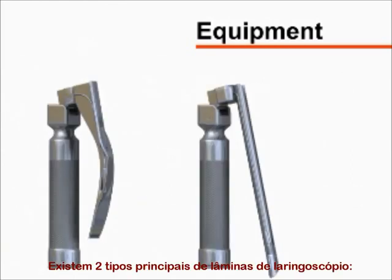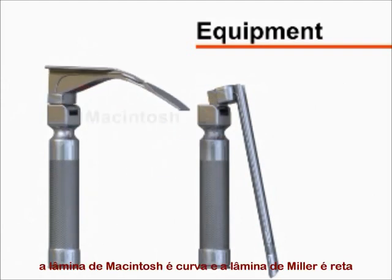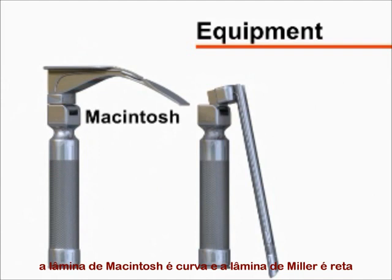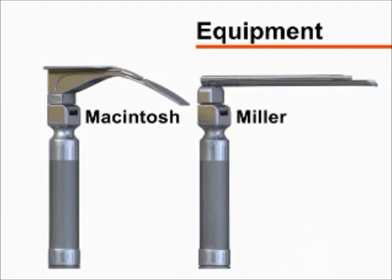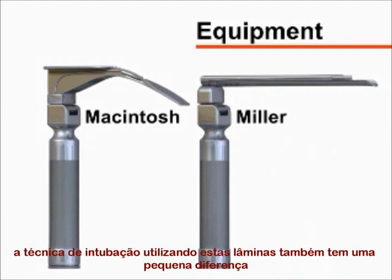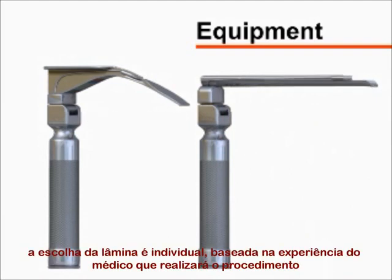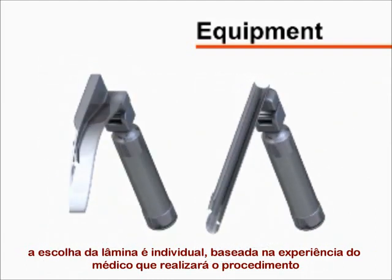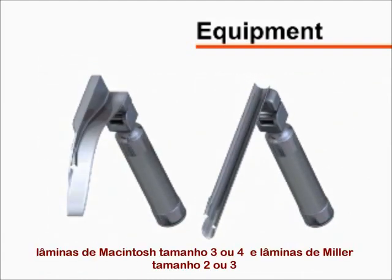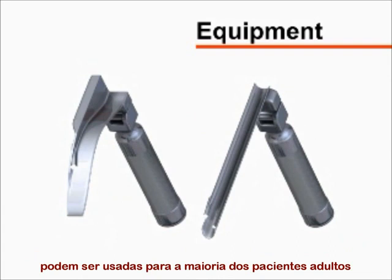There are two main types of laryngoscope blades, each available in various sizes. The tip of the Macintosh blade is curved. The Miller blade is straight, and each requires a slightly different technique. The choice of blade is based largely upon the experience and personal preference of the operator. A size 3 or 4 Macintosh or a size 2 or 3 Miller can be used in most adult patients.